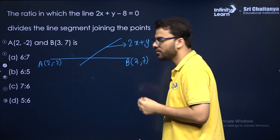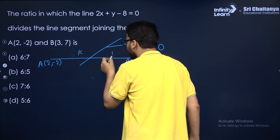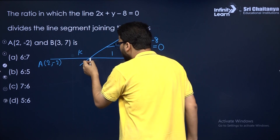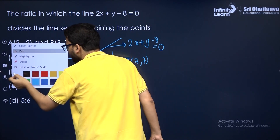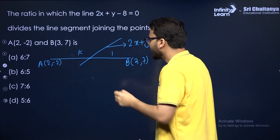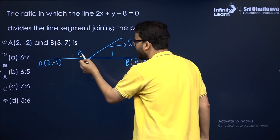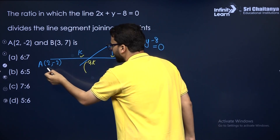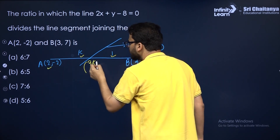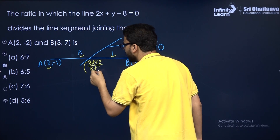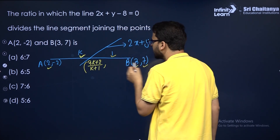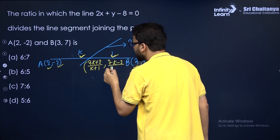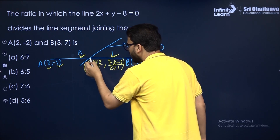You have to find the ratio. Suppose the required ratio is k to 1. Now, using the section formula, the x-coordinate of the point of division will be (3k + 2) upon (k + 1), and the y-coordinate will be (7k minus 2) upon (k + 1). So these are the coordinates of the point of intersection.